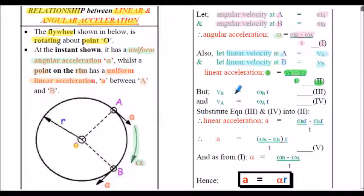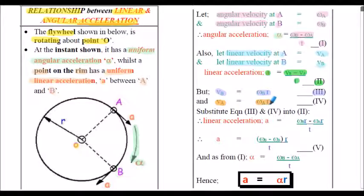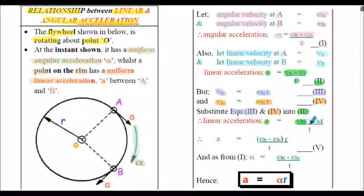We know from our previously derived relationship between linear and angular velocity that VB equals ωB multiplied by R — equation 3 — and VA equals ωA multiplied by R — equation 4. Substituting equations 3 and 4 into equation 2, we find that the linear acceleration a equals ωB·R minus ωA·R, all divided by T — call that equation 5.